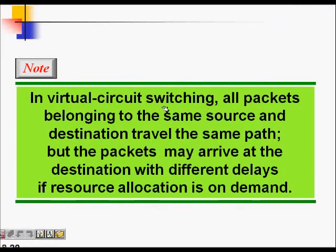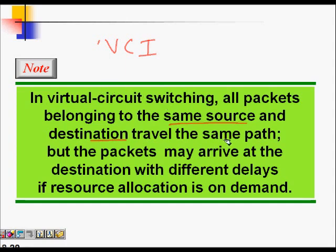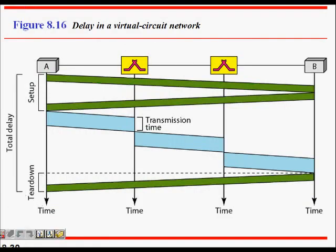In virtual circuit switching, all packets belonging to the same source-destination pair travel the same path because of the VCI. The route for each packet is the same, but packets may still arrive at the destination with different delays.